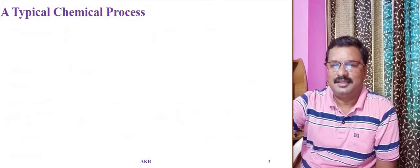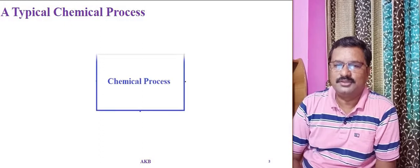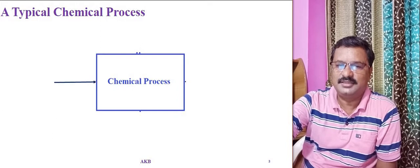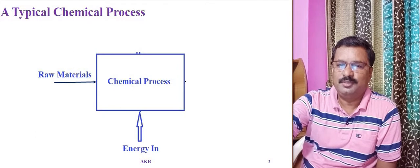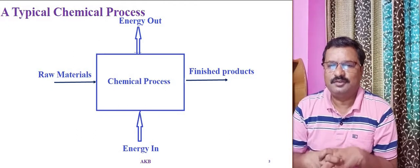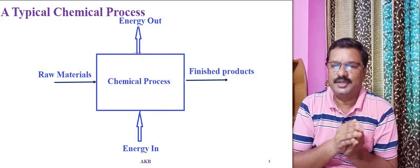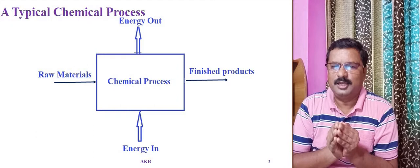We will understand a typical chemical process with the help of this simple schematic diagram. The rectangular box represents the chemical process. Inputs are raw materials and energy. With these two inputs, raw materials are converted into finished products and some amount of energy is lost out of the chemical process. This is the simple way of understanding the chemical process: convert raw materials into finished products with the help of energy.